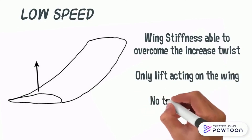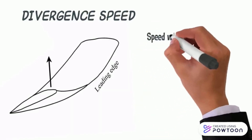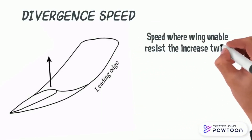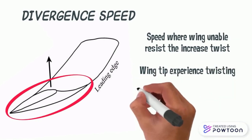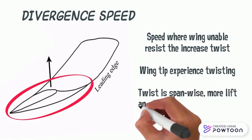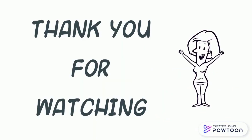Where no twisting occurs at the wing tip. However, when the flight speed raises to divergence speed, which is the speed where the wing is unable to resist the twist anymore, twisting is bound to happen at the wing tip, due to the span-wise reaction of twist. That's all for the topic of divergence. Thank you for watching.